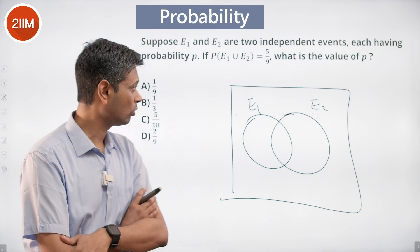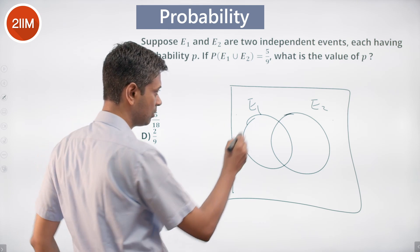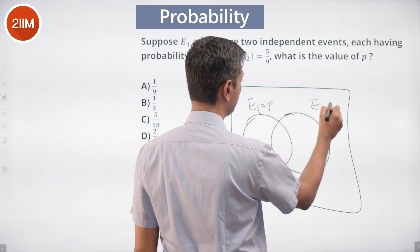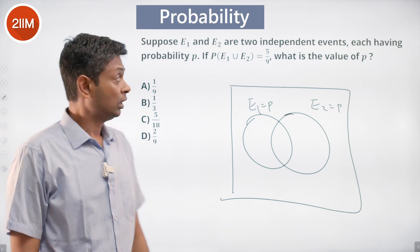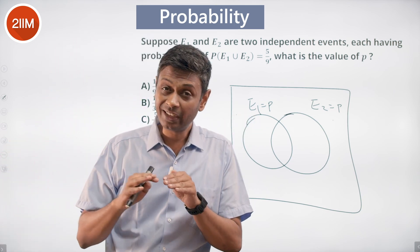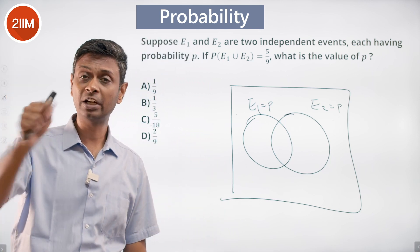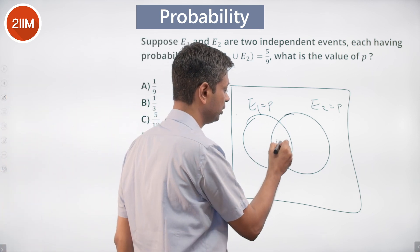So if I multiply these two. Probability of e1 happening is p, probability of e2 happening is p. E1 union e2 is not p plus p because there is an e1 intersection e2. What is that e1 intersection e2? They are independent events. This part we are going to be p square.